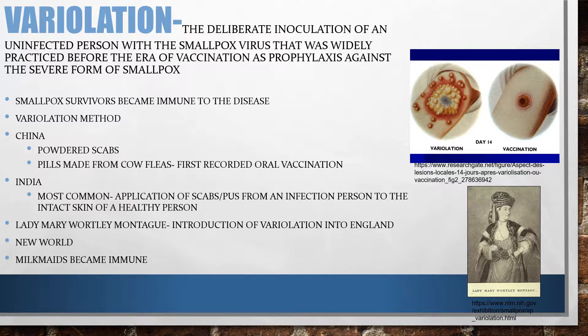Lady Mary Wortley Montague, an English aristocrat, was responsible for introducing variolation into England. She suffered a severe episode of smallpox in 1715 that disfigured her face, and she demanded that her five-year-old son and four-year-old daughter be inoculated — the first professional variolation performed in England. Variolation soon reached the United States, and in 1721 it was used to stop the smallpox epidemic in Boston.